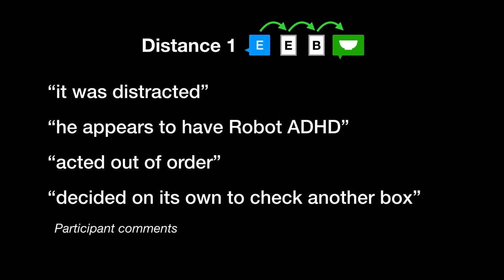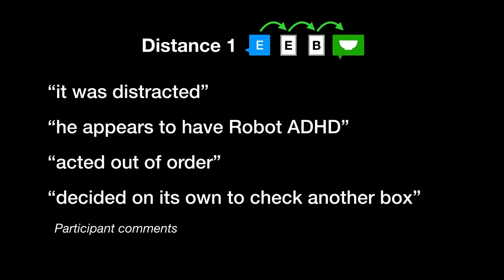Looking at responses, many participants attributed the off-task actions to the robot's agency, saying things like it was distracted, or that it decided on its own to check another box. Some said that going off-task made the robot seem more inquisitive about its surrounding environment.